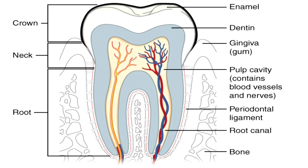Now we will see what we have learned in the diagram. On the left side of the teeth you can see: crown, which is the topmost, uppermost part of the teeth; next is neck, that lies between crown and root; and the bottommost part is root.